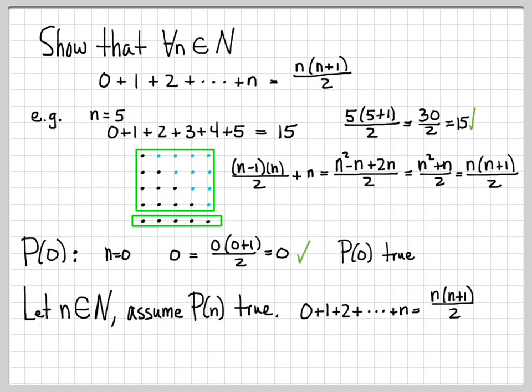Using this fact, we have to end up with P of n plus 1. So let's do a couple manipulations and show that this implies that P of n plus 1 is true. So let's just go ahead and compute what P of n plus 1 is. So that would be basically adding up the numbers 0 plus 1 plus 2 all the way up to the number n plus 1. So you can see here, I've gone one number beyond n to n plus 1.